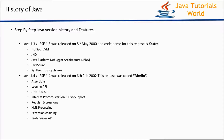The next release of Java is Java 1.4, released on 6th February 2002. This release was called Merlin. It includes features like Assertions, Logging API, JDBC 3.0 API, IPv6 support, API to handle regular expressions, API to process XMLs, Exception Handling, and Preferences API under the java.util.prefs package.